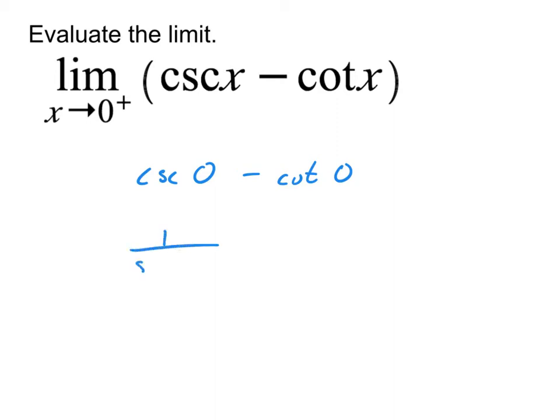Cosecant is one over sine, so cosecant of zero is one over sine of zero. Cotangent is cosine over sine, so cotangent of zero will be cosine of zero divided by sine of zero. If we take a look at each of those, on the first one, sine of zero is zero, and cosine of zero is one, and sine of zero is still zero. So both of these end up being one over zero. In the context of our limits, that means we end up with infinity minus infinity, which is why this one is in the indeterminate differences section.